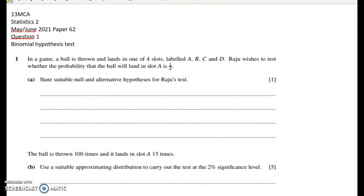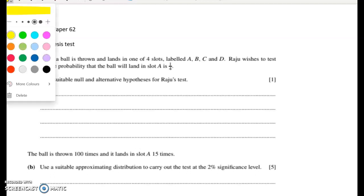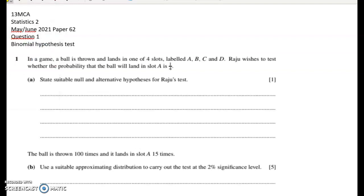Kia ora Year 12. This is a question for Sahisnu from the May-June 2021 paper, and it's the second Stats 2 paper, so paper number 62. These were the papers that never got sat in the UK because of COVID, but it's a really nice question.